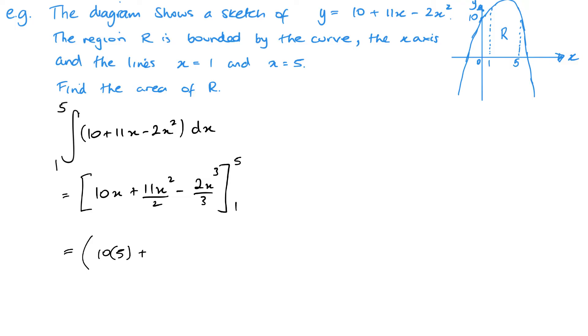So we get 10(5) + 11(5²)/2 - 2(5³)/3 take away what is essentially 10, it will be 11/2, and 2/3 there. And this is 268/3 or 89.3 recurring.